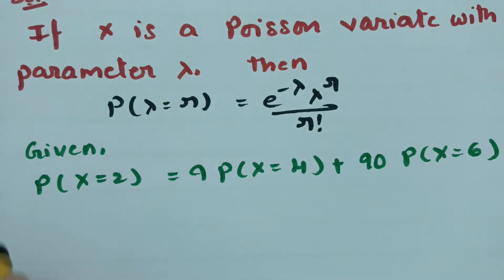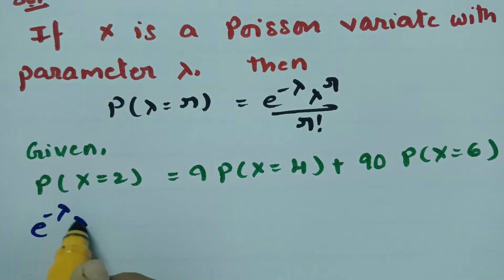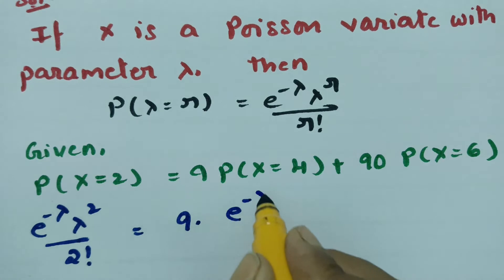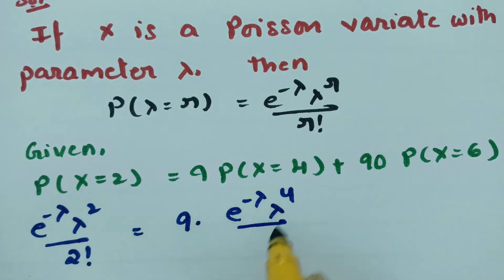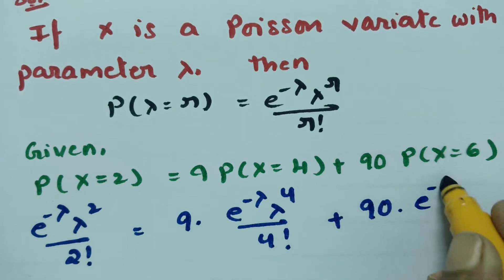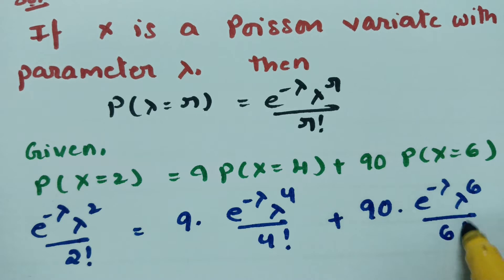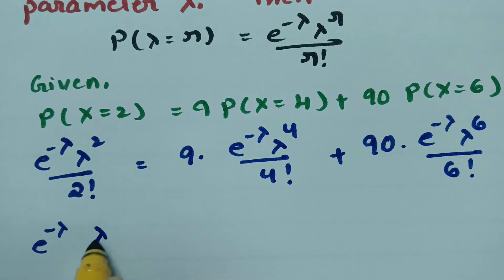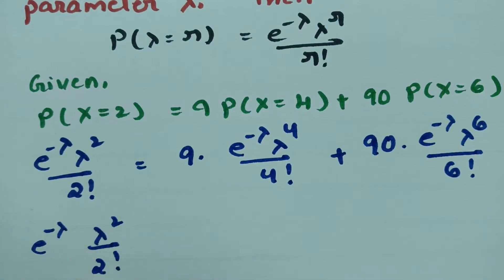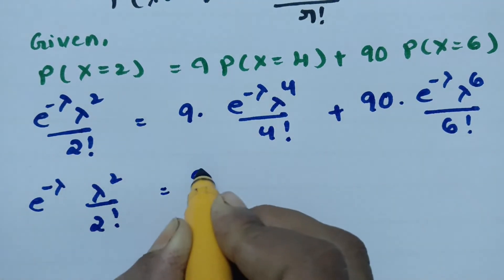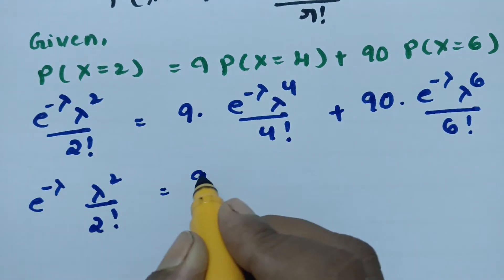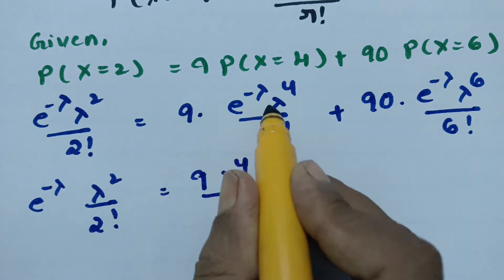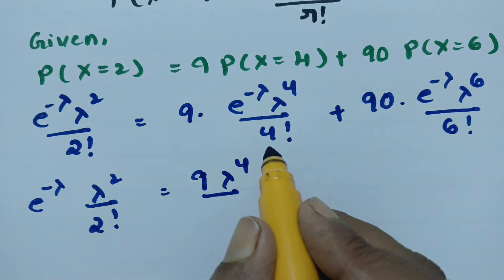Substituting the Poisson formula for each term: for r equals 2, we get e to the power minus lambda times lambda squared by 2 factorial. This equals 9 times e to the power minus lambda times lambda to the 4 by 4 factorial — where 4 factorial equals 1 times 2 times 3 times 4, which is 24.